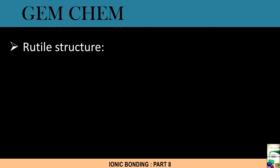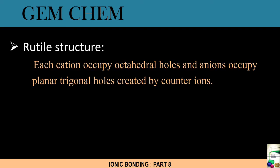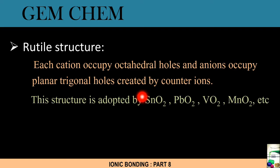The last structure of our discussion is rutile structure. What happens here, mainly this structure is occupied by titanium oxide, TiO2. Each cation occupies octahedral holes and anions occupy planar trigonal holes created by counter ions. Other examples are SnO2, PbO2, VO2, and MnO2. There are more examples but these are sufficient.